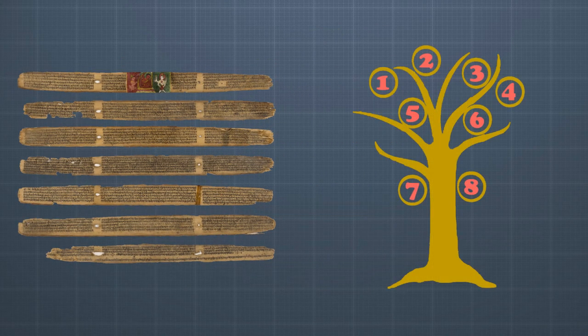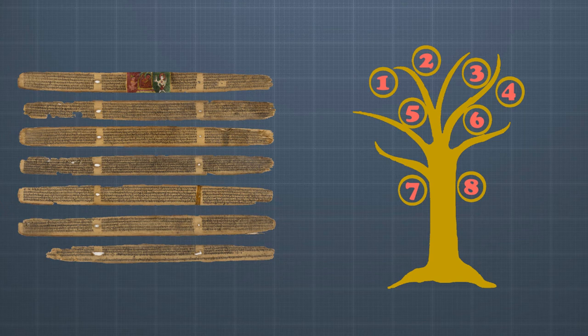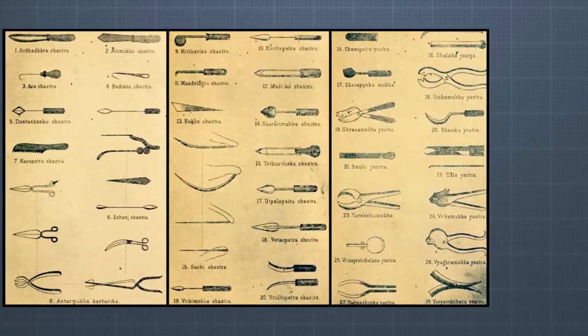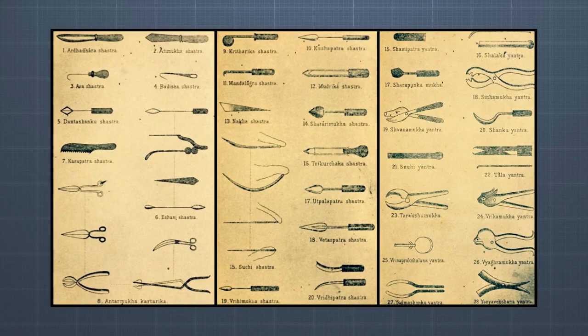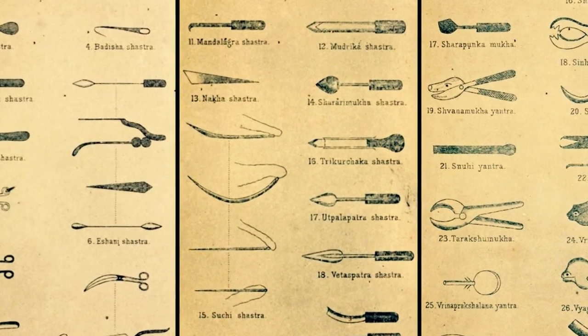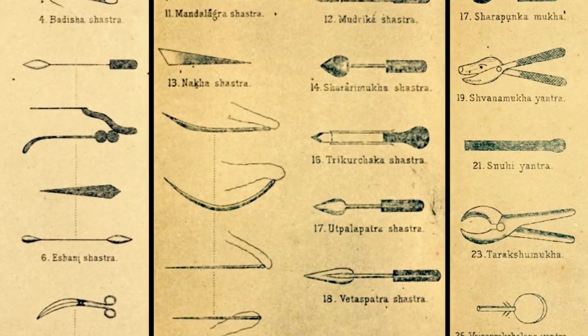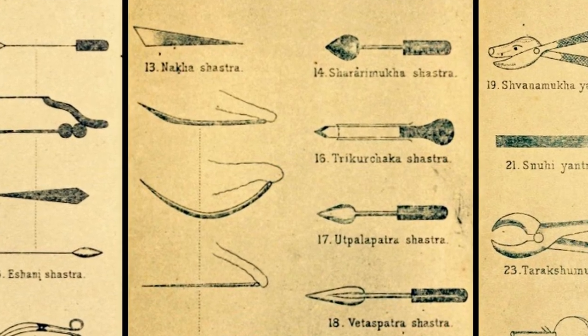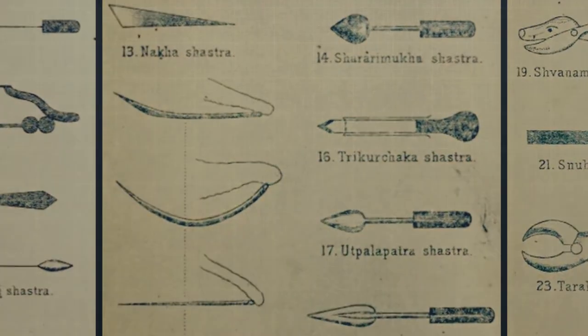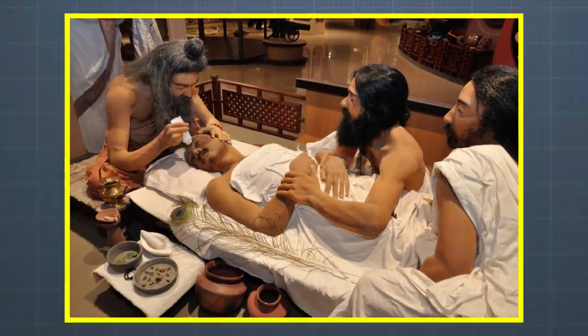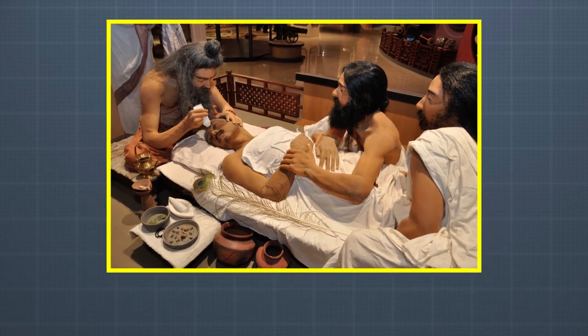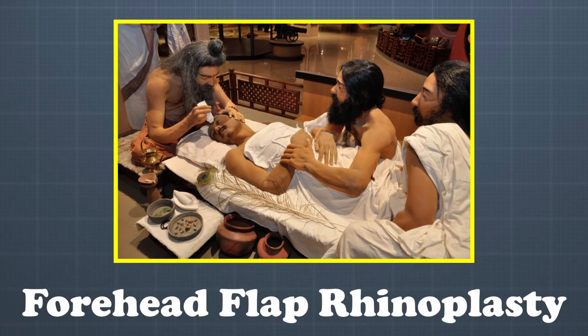His scripture, the Sushrut Samita, or the Compendium of Sushrut, encompasses the eight branches of Ayurvedic medicine. There are six sections and 184 chapters. Inside are details about 650 drugs of animal, plant, and mineral origin. Described are 300 kinds of operations that require 42 different surgical treatments and 121 different types of surgical instruments. Sushrut's treatise provides the world's first written record of a forehead flap rhinoplasty, which is a technique still in use today by our surgeons.